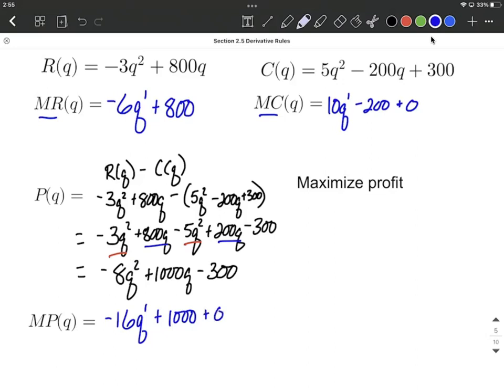Now in order to maximize our profit, the goal on this to maximize our profit is going to be figure out when does the marginal profit equal 0. That's going to be when we have a horizontal tangent line. So let's set that marginal profit, negative 16q plus 1000 equal to 0, and work on solving down for q.